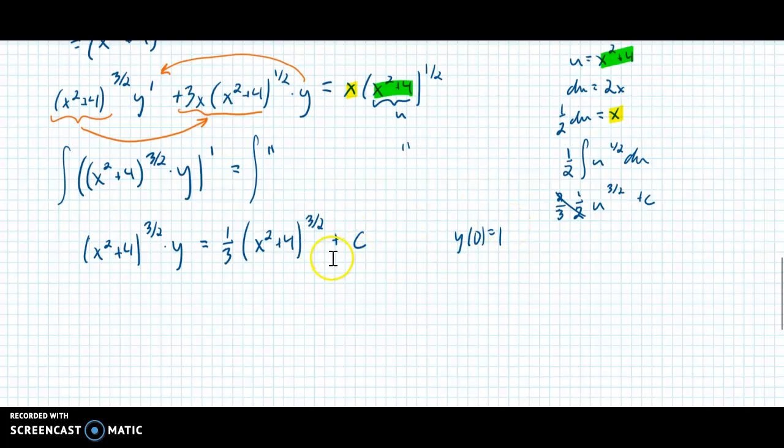So this is x. This is y. So notice, anytime I have an x, it's going to be 0. So this little parenthesis right here, that x squared is just going to go to 0. So I'm going to have 4 to the 3 halves. 4 to the 3 halves times y is 1 equals 1 third times, again, 4, oops, 4 to the 3 halves, plus c.